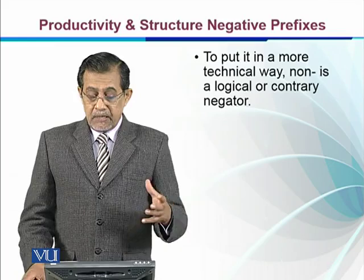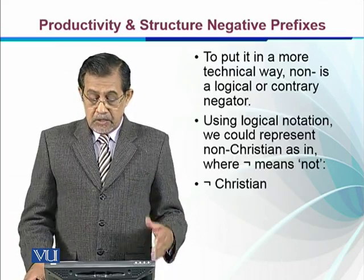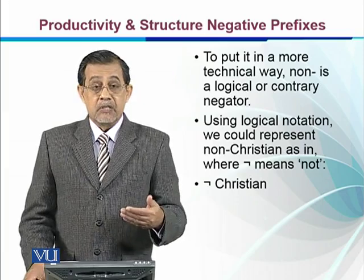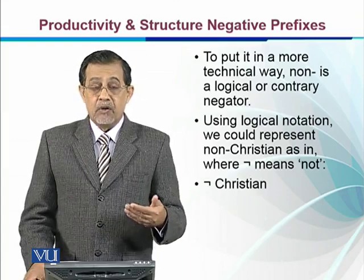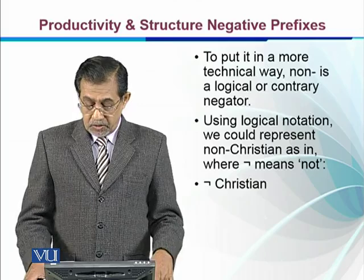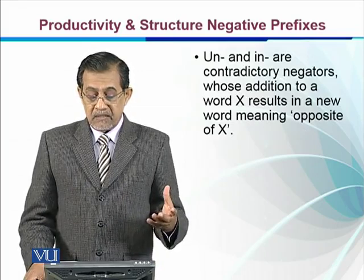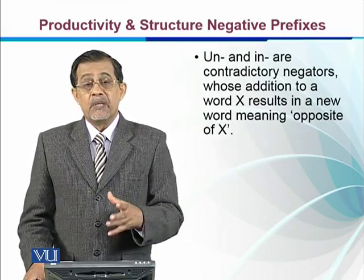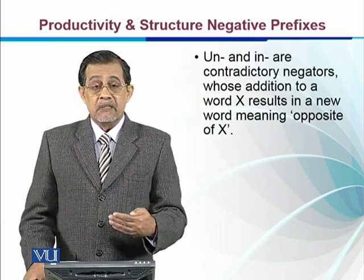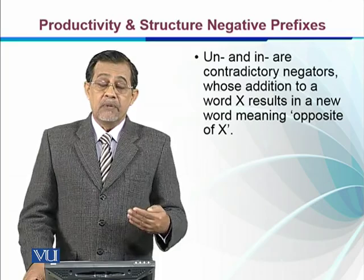To put it in a more technical way, non- is a logical and contrary negator. Using logical notation, we could represent non-Christian as ¬Christian, where the negation symbol means 'not,' so ¬Christian means 'not Christian.' Un- and in- are contradictory negators whose addition to a word x results in a new word meaning the opposite — for example, inhuman means behavior not likely to be seen in human beings.